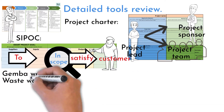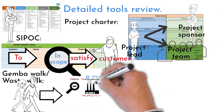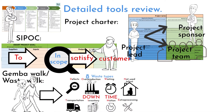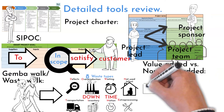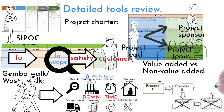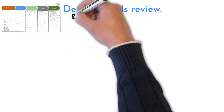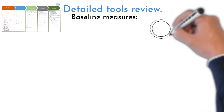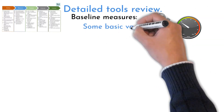Waste Walk is visiting the area being improved by the project team and identifying obvious wastes and opportunities for improvement. Value Added and Non-Value Added Identification is a review of the process and waste identification within it — it triggers actions for improvements to eliminate wastes. Baseline Measures are measures that help establish basic process parameters like time or speed.